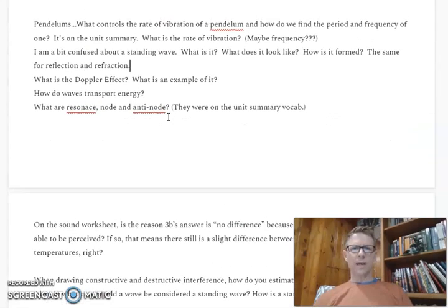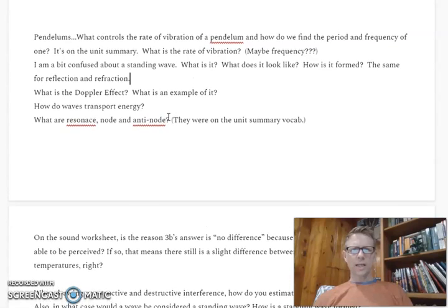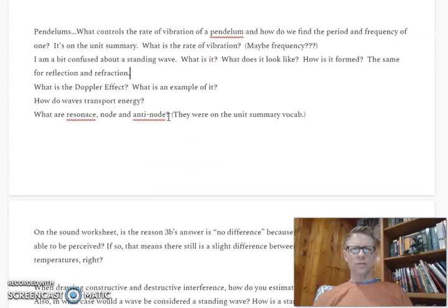A standing wave happens because of interference. You want to be able to draw the two waves going at each other like the wave interference worksheet, and you judge how high those are based on what the two amplitudes were.